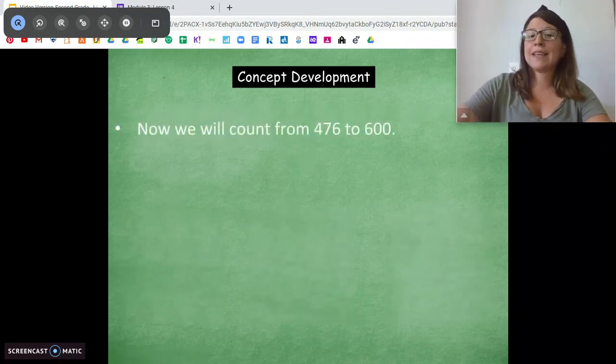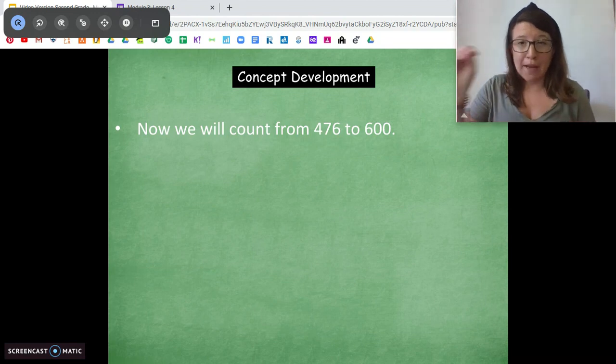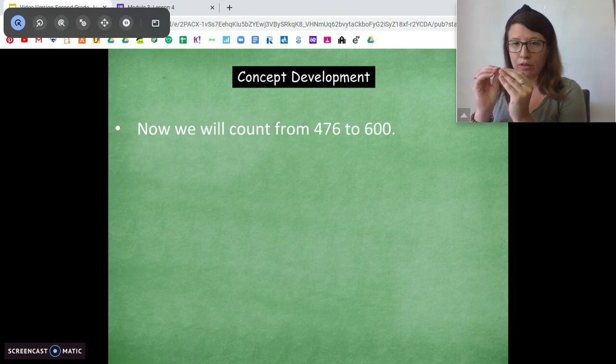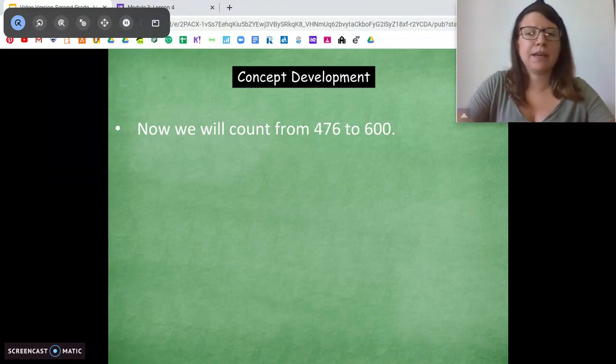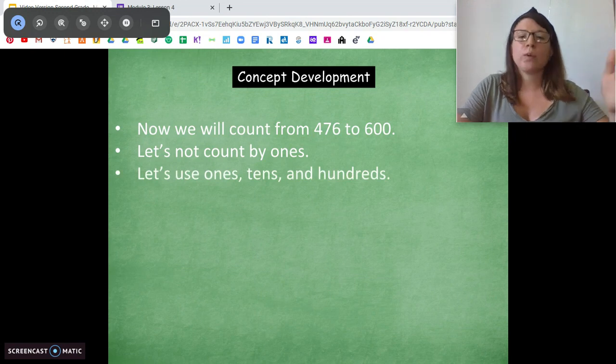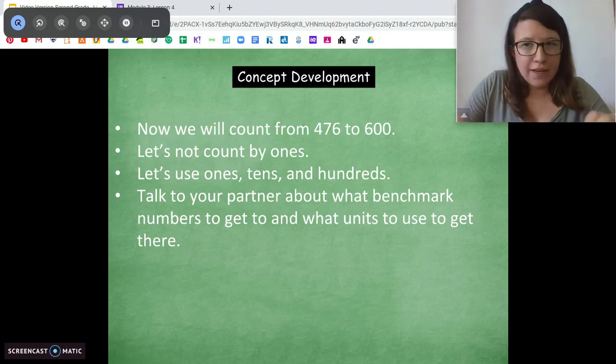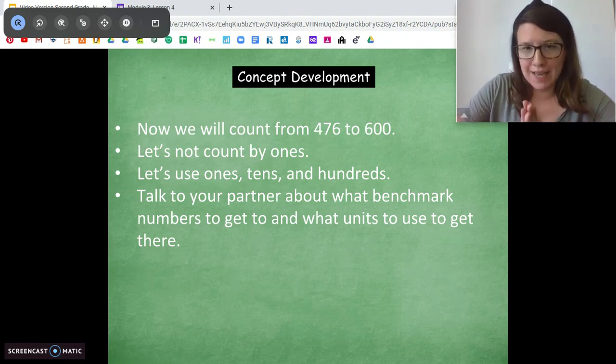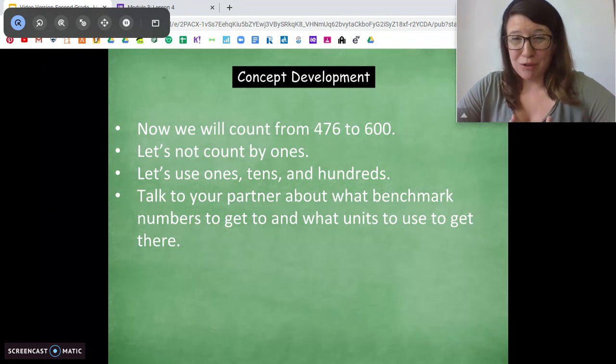Okay. Now we're going to practice counting from 476 to 600. Remember when we do this, we want to get to those benchmark numbers that make it easier for us to count by 10s or for us to count by 100s. So when we're starting at 476, we want to take the 1s and get them to the next 10. And then once we're at 100s, get it to the next 100s. That make sense? So we don't want to count by 1s because that's going to take forever. So we're going to use a combination of 100s, 1s, 10s, and 100s to get there. So I want you to pause the video and talk to someone at home. What should our first step be to make it easier for us to count by 10s? What should we count by 1s? And what number should we get to?